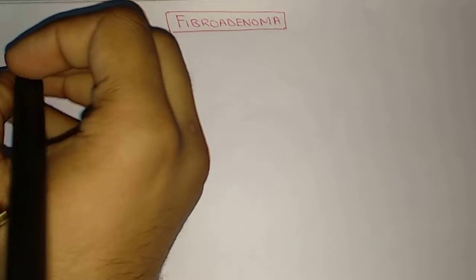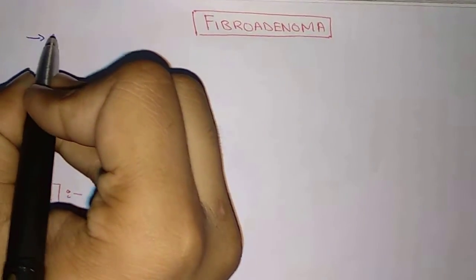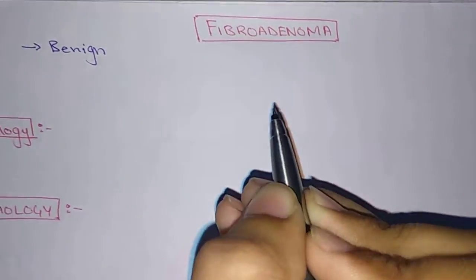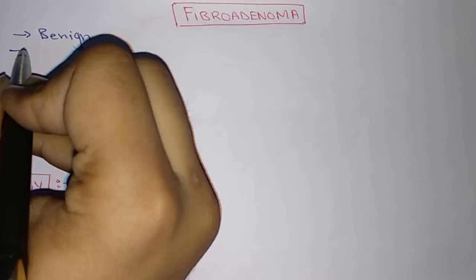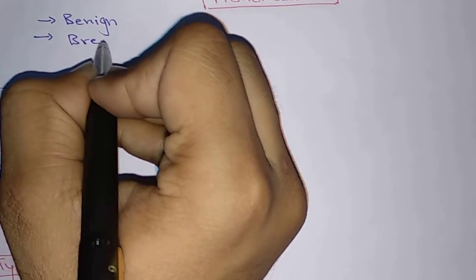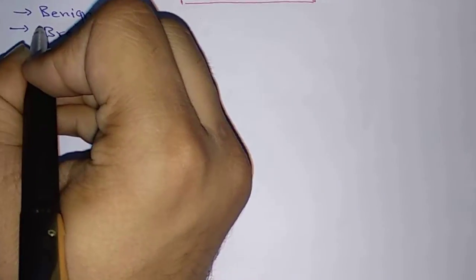Hello everyone, welcome to Embraceggs.com. In this video we are going to discuss fibroadenoma. Fibroadenoma is a benign tumor of breast tissue, also known as breast mouse. It is called breast mouse because it is freely movable in the breast and not fixed to the structures.